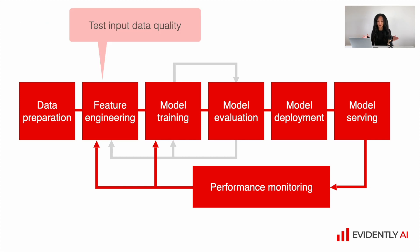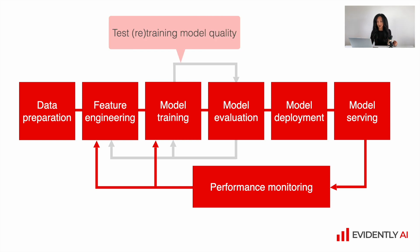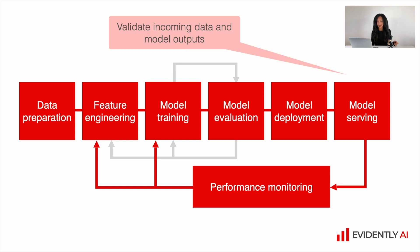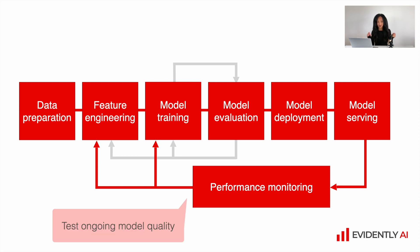First of all, it's important to test our input data, because if you have garbage data as input it will influence the whole pipeline. We can also perform checks after we train or retrain our model to verify its quality. It's very important to validate the incoming data together with the model's output, because sometimes we can catch important signals when the output changes unexpectedly. And finally, it's very important to regularly test the ongoing model quality in order to detect when quality drops and react.